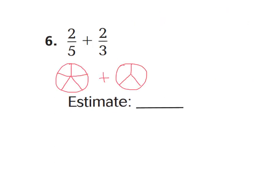Let's go ahead and look at number six. Number six says two-fifths plus two-thirds. I went ahead and drew a fraction circle cut into five equal parts, and also a fraction circle cut into thirds. I can shade in two-fifths to help me visualize this better. This is two-fifths, and now I'm going to shade in two-thirds. Remember, whenever you estimate a fraction, you're either going to estimate it to zero, one-half, or one-whole.